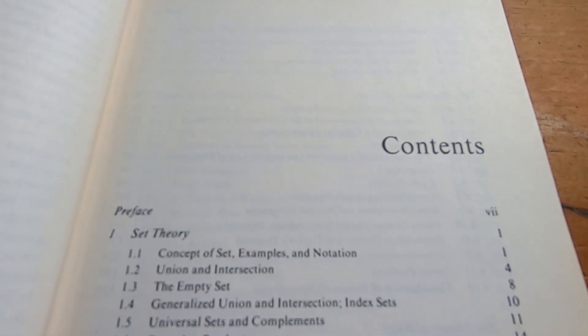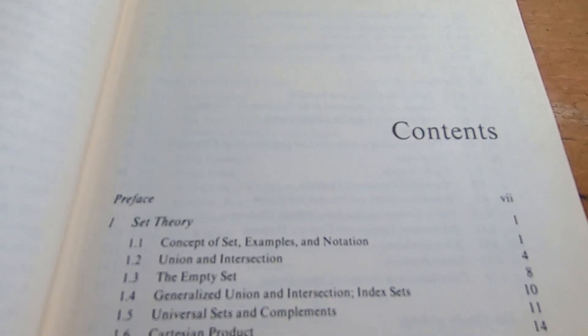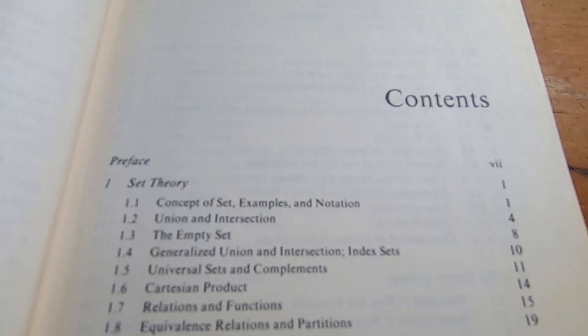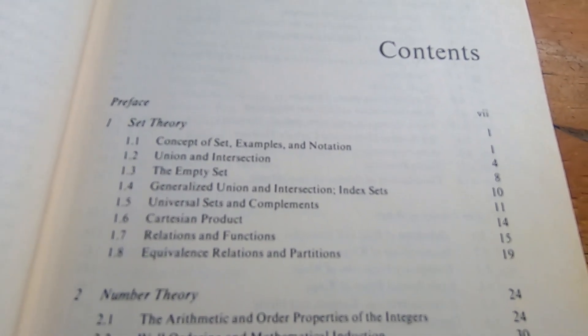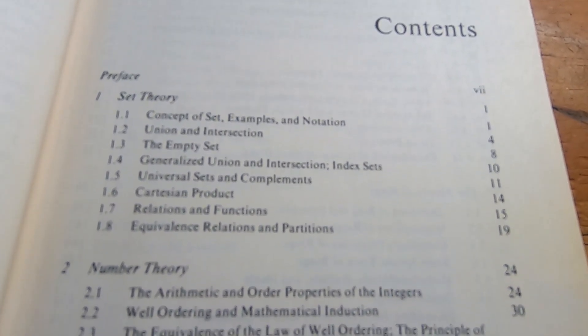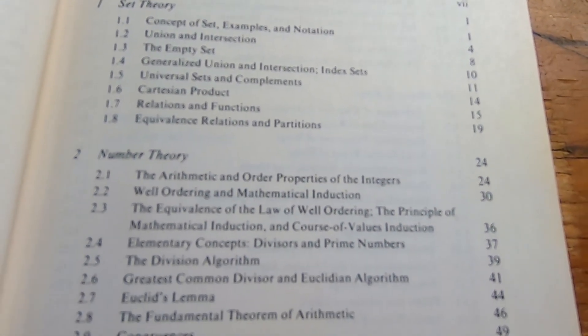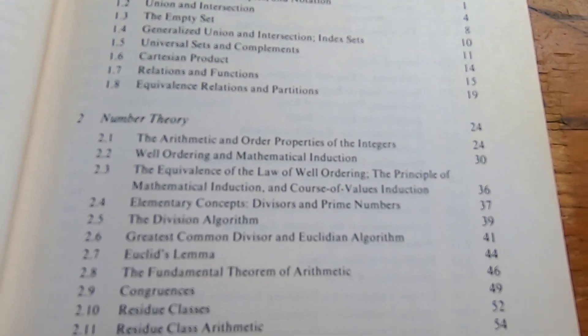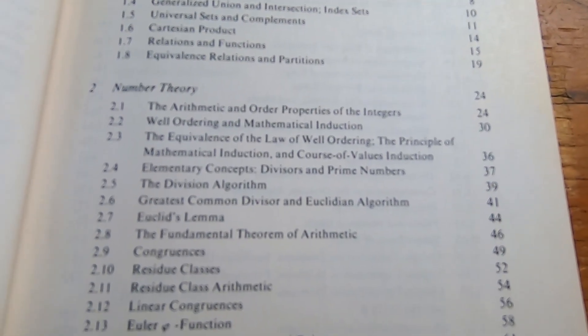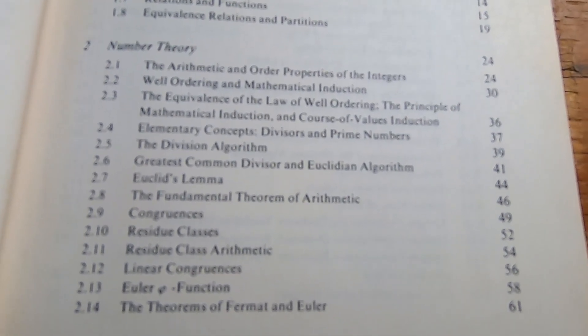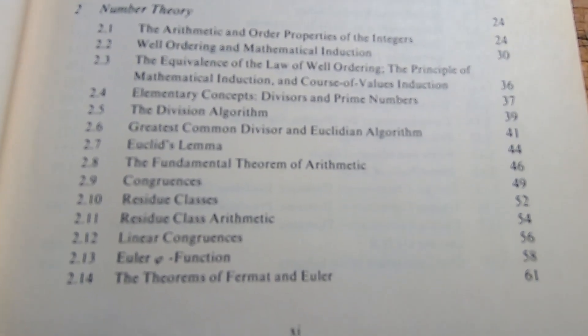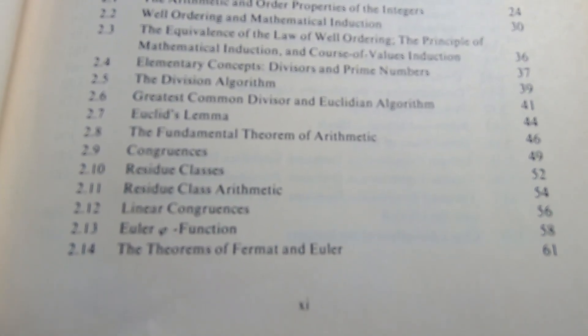This is the Table of Contents, so it starts off with Set Theory. I'll go through it slowly so you can see all of the topics. Then it goes on to Number Theory, which is quite useful in several areas of abstract algebra. It's kind of nice that they do review it. I've had abstract algebra books that don't review the number theory. They kind of wait until you absolutely need it, which is also okay.